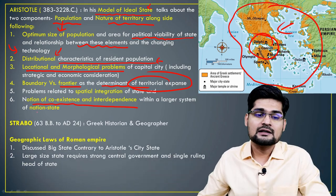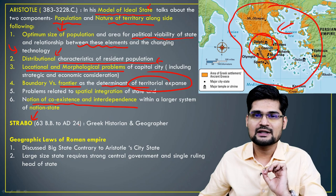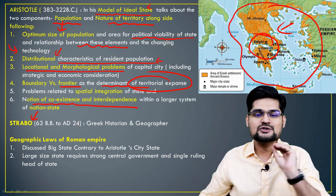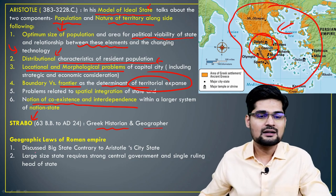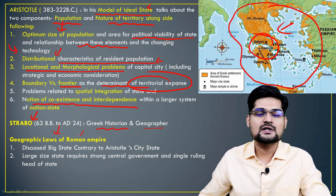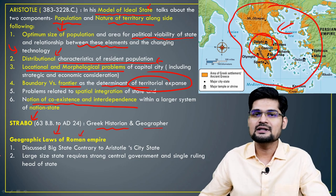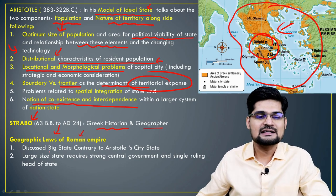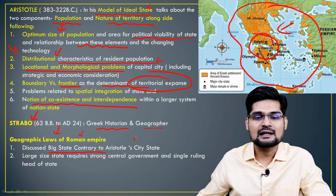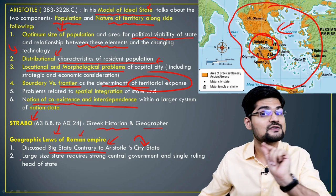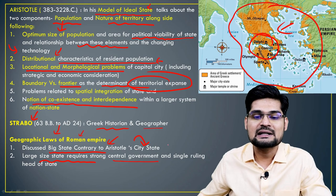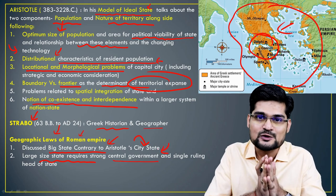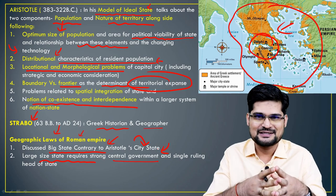Another major scholar from Greco-Roman civilization was Strabo — a Greek historian and geographer who traveled around the Roman Empire. He discussed the laws important for governance and the political arena of the Roman Empire. He discussed the concept of a big state, contrary to Aristotle's city-state, and paved the way for the expansionist approach of the Romans — that a large-sized state required a strong central government.